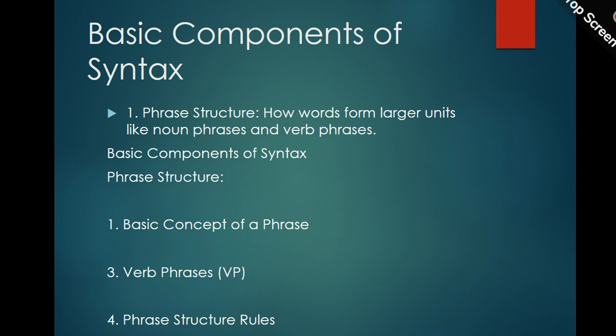Example: simple NP — the cat. Verb phrases (VP): a verb phrase is a group of words that centers around a verb, which is the head of the phrase. Verb phrases often include the main verb along with its complements, objects, or modifiers. Phrase structure rules: phrase structure can be described using phrase structure rules, which are a set of grammatical rules that specify how different types of phrases are formed.